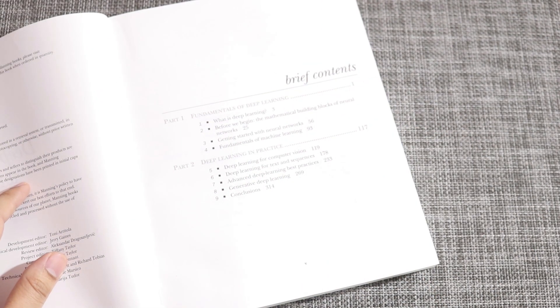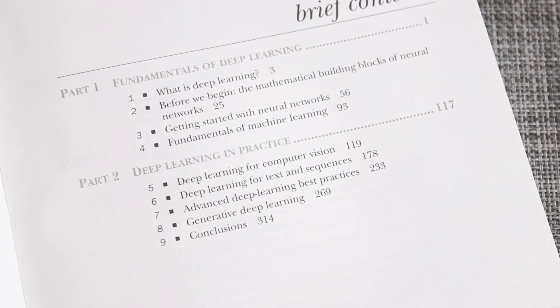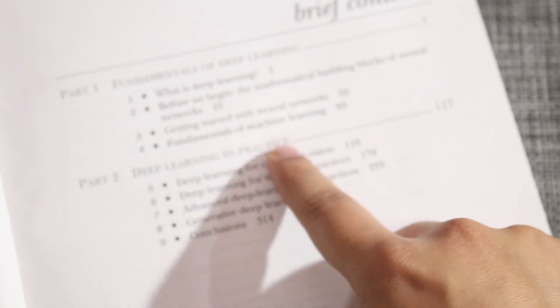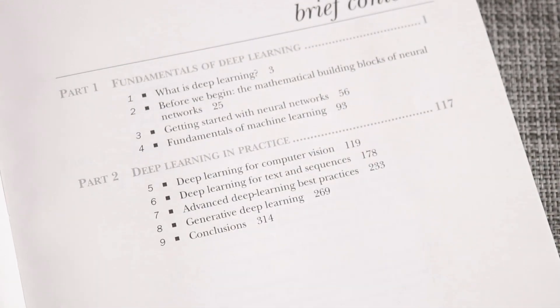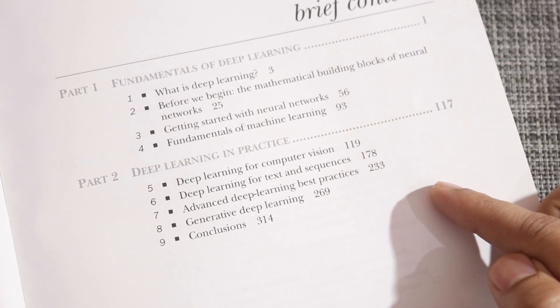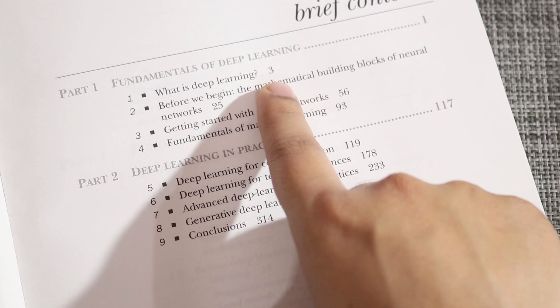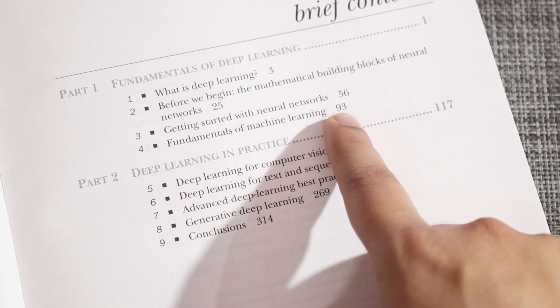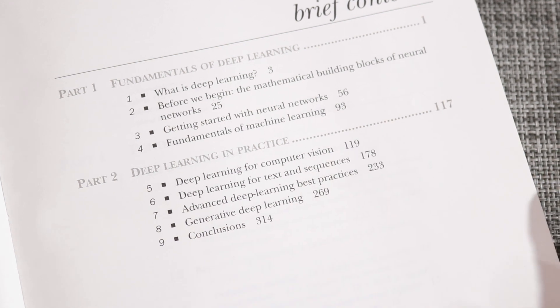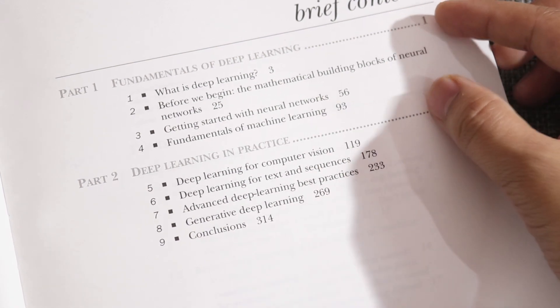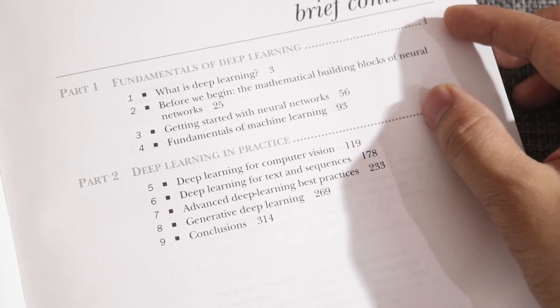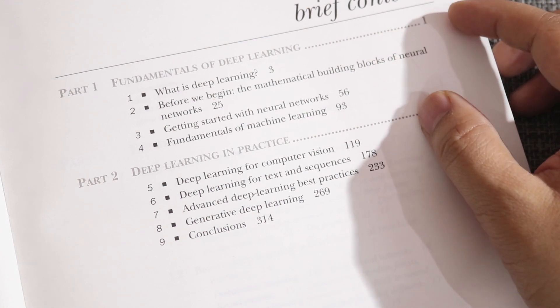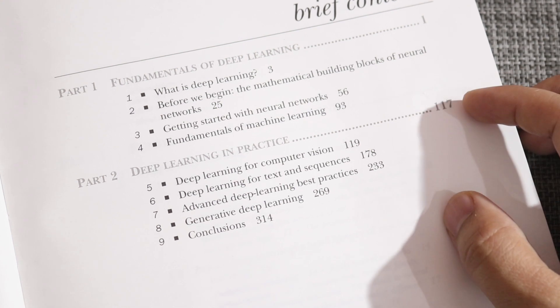So let's look at the brief contents. The book is divided into two parts: Part One is Fundamentals of Deep Learning, and Part Two is Deep Learning in Practice. The first part covers what is deep learning, the mathematics required, getting started with neural networks, and fundamentals of machine learning. If you have no prior knowledge, this section will help you build an understanding of the entire ecosystem. If you already understand deep learning, you may skip a few chapters.